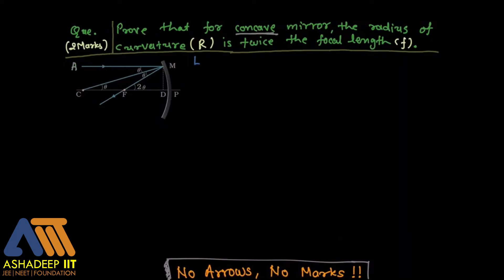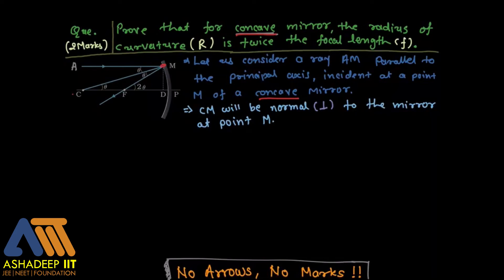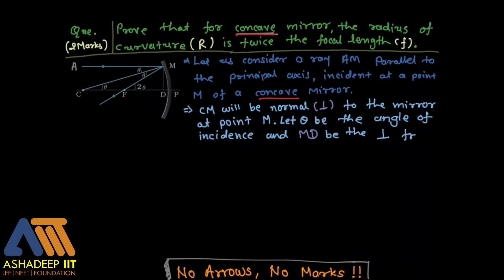The proof has three parts: first the diagram, second the description of the diagram, and then the derivation. Let us consider ray AM which is parallel to the principal axis and incident at point M of the concave mirror. Since the question asks for concave mirror, we specify that here.